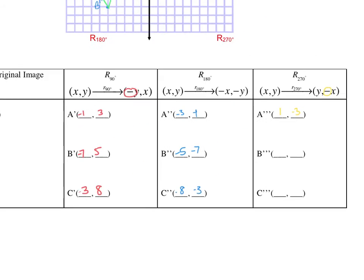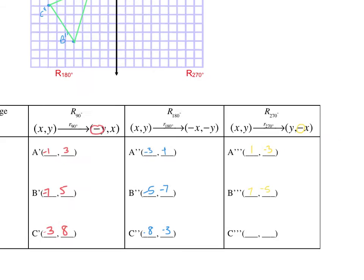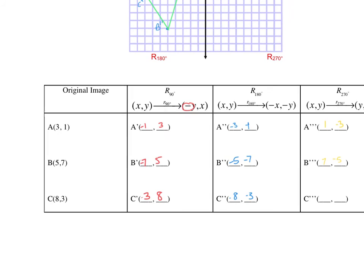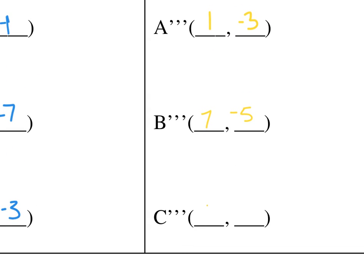I start with (5,7). So I'm going to flip them. So I'm going to have (7,5). And then I negate my second value. I start with (8,3). So I'm going to end with (3,8). So I'm going to flip them. So I have my (3,8) flipped. And then I make my second value negative.